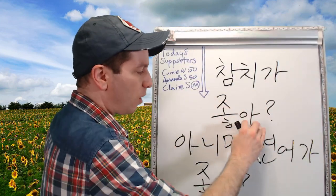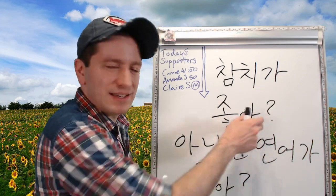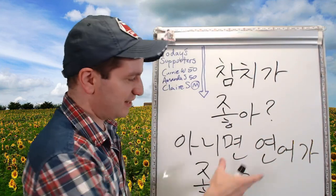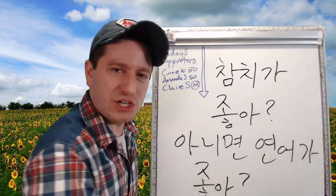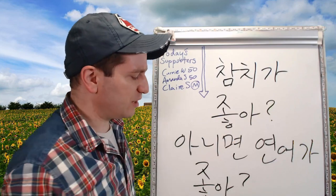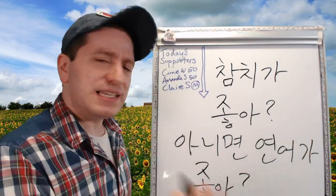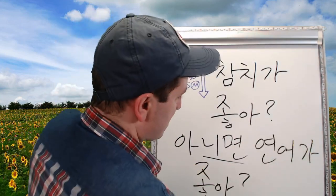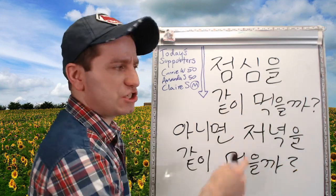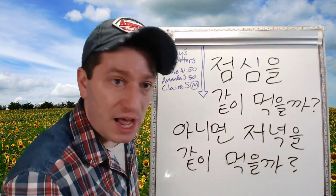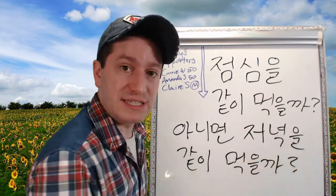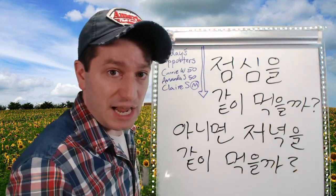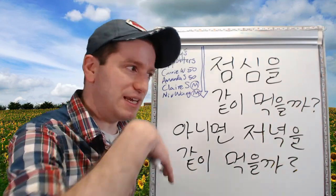참치가 좋아? 아니면 연어가 좋아? '참치가 좋아?' literally means 'is tuna good?' — so 'do you like tuna?' '아니면 연어가 좋아?' means 'if not, do you like salmon?' So: do you like tuna or salmon? Notice they are separate sentences, and because of 아니면, this has to be one or the other — pick one, A or B. Another example: 점심을 같이 먹을까? 아니면 저녁을 같이 먹을까? — 'Shall we eat lunch together, or if not, shall we eat dinner together?' — meaning 'shall we eat lunch or dinner together?'